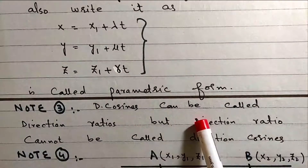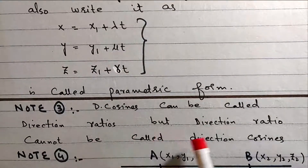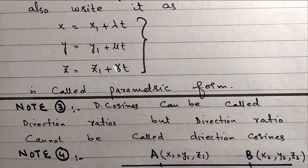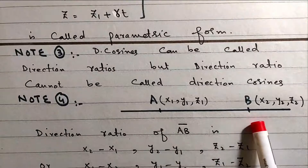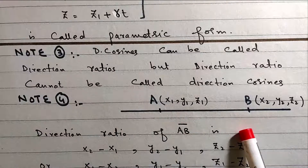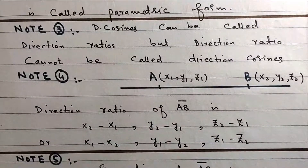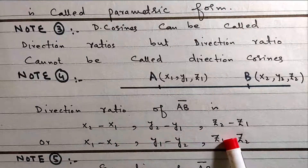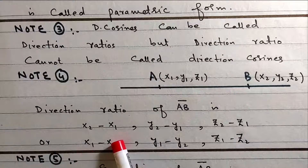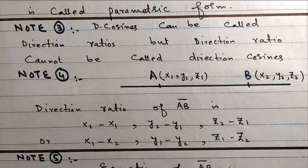Note 3: Direction cosines can be called direction ratios, but direction ratios cannot be called direction cosines. Note 4: If a line passes through two points A(x1, y1, z1) and B(x2, y2, z2), then the direction ratios are: x2 − x1, y2 − y1, z2 − z1, or equivalently x1 − x2, y1 − y2, z1 − z2.